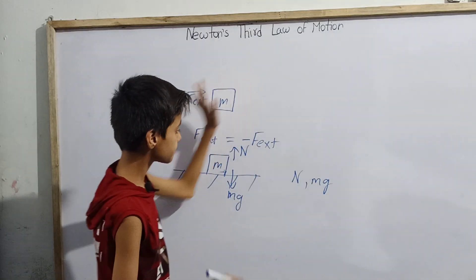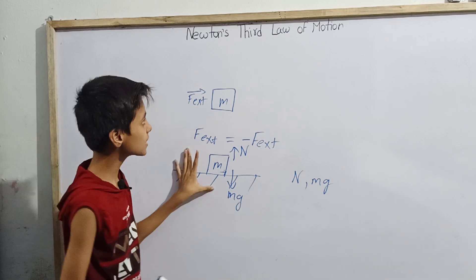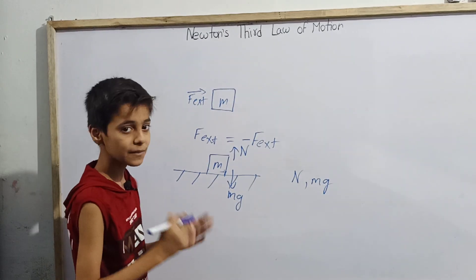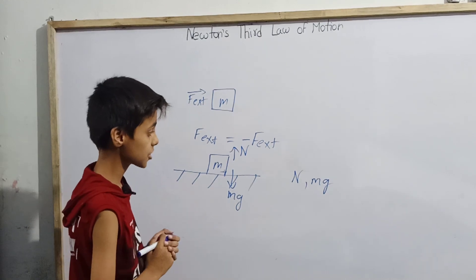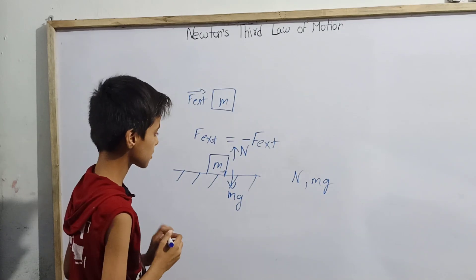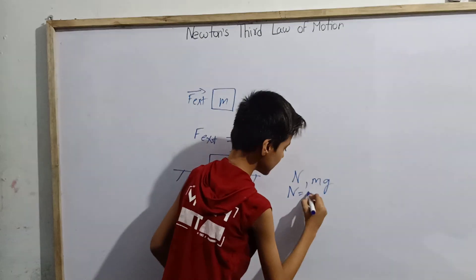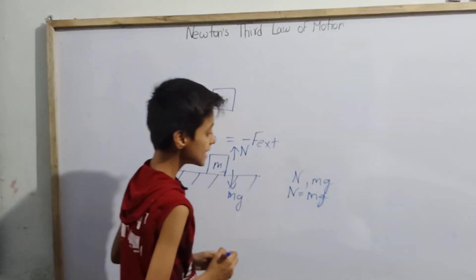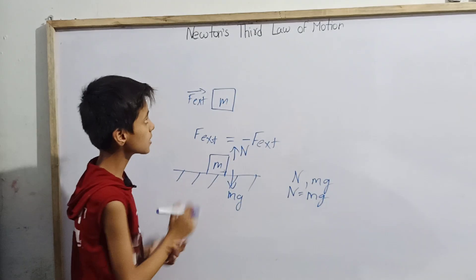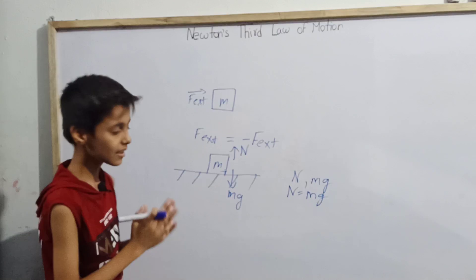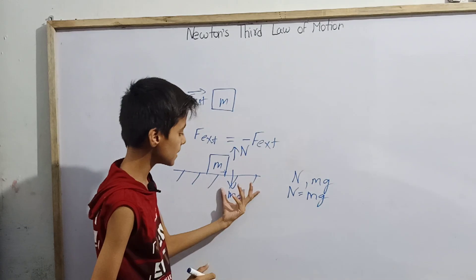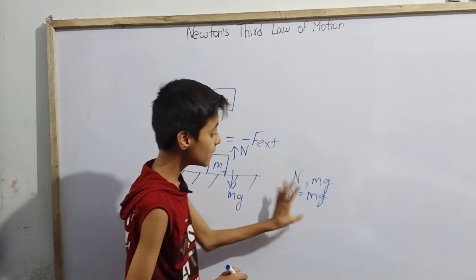Newton's third law of motion itself states three conditions for action-reaction forces. We can say that two forces are action-reaction pairs only when these conditions are met. The first condition is that the magnitude of the force should be same and direction should be opposite. The magnitude of N is Mg and direction is opposite — so this first condition is followed. The second condition is that the forces should be of the same nature.